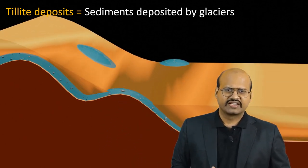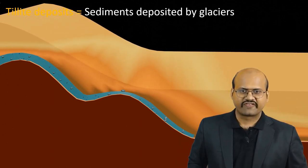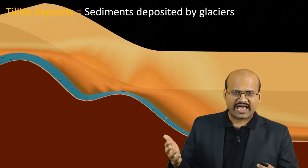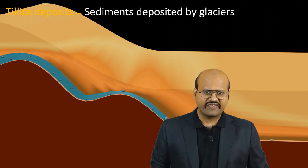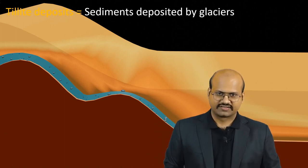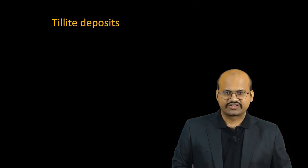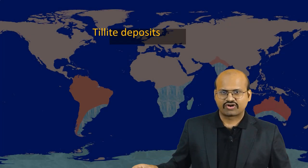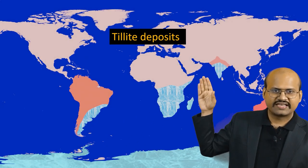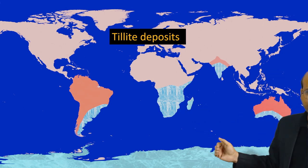But if we can dig through these layers, we can find the presence of tillite deposits, which act as evidence of glaciation in that region. Such deposits were found across South America, Africa, India, Australia and Antarctica.